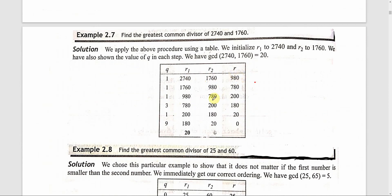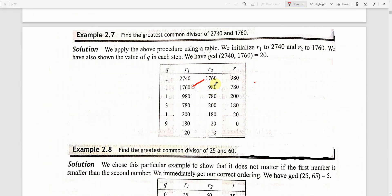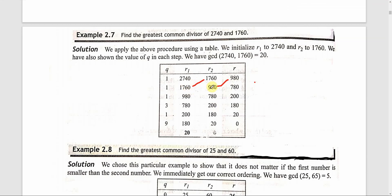This remainder 980 is moved to R2. Now we exchange the values: R2 goes to R1 and the new remainder goes to R2. The next R1 and R2 values will be 1760 and 980. Then, 1760 minus 980 is 780.